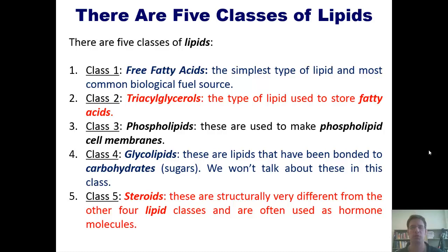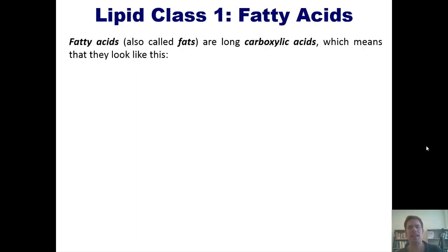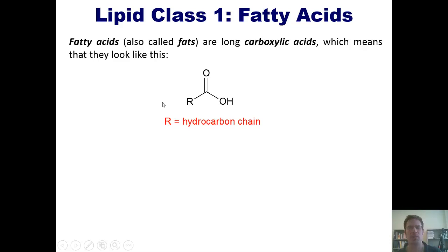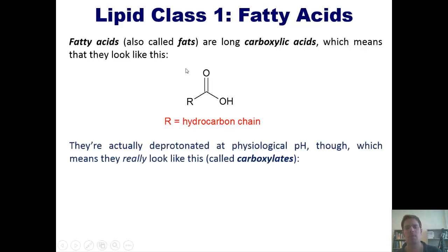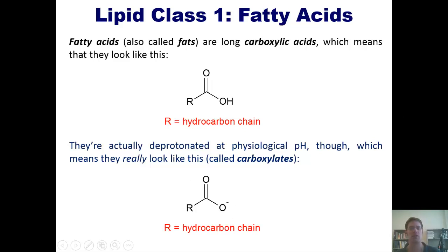Let's begin by introducing free fatty acids. Fatty acids, which are also sometimes commonly just called fats, are long carboxylic acids, which means they have a structure where this R chain represents a hydrocarbon chain that will vary in length and structure from one specific fatty acid to another. At physiological pH, carboxylic acids are actually deprotonated, which means they don't have a hydrogen on the oxygen — they exist as a negatively charged ion. This is the structure of a free fatty acid at physiological pH in our bodies.